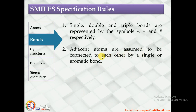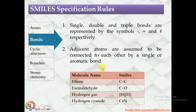Adjacent atoms are assumed to be connected by a single or aromatic bond. See these examples: ethene is represented as C=C; formaldehyde as C=O; hydrogen gas is represented as [H][H], showing the connection between the two hydrogen atoms; and hydrogen cyanide, as it has a triple bond, is represented with a '#' between carbon and nitrogen: C#N.